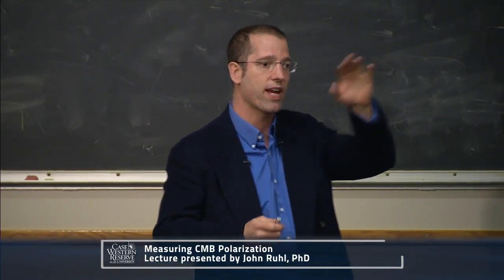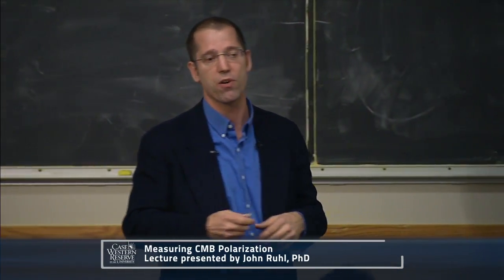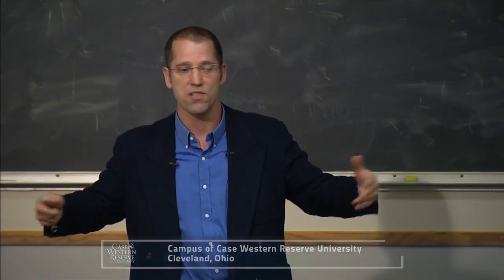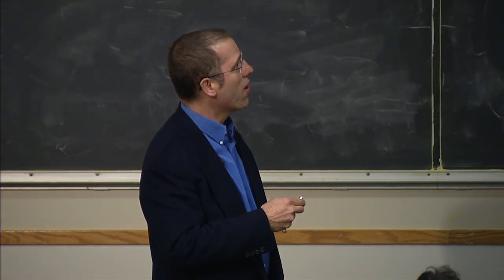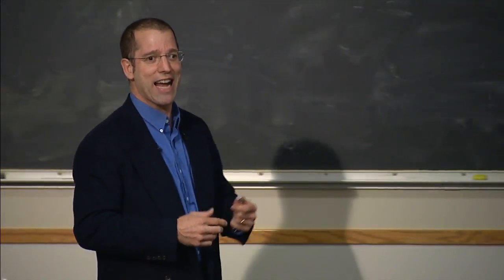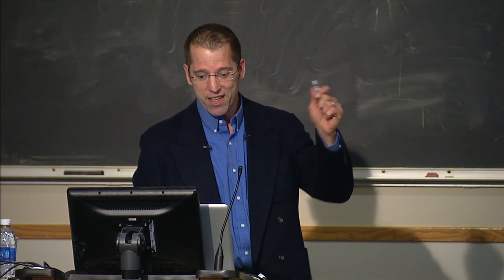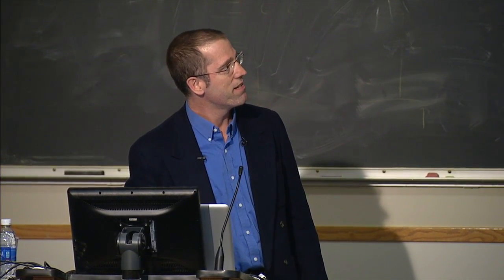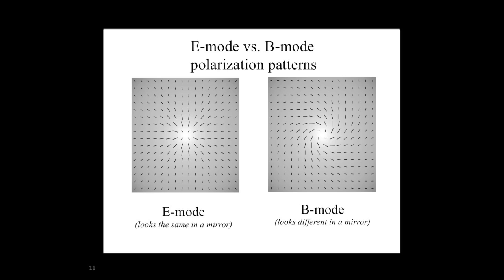Now there's a problem. Gravity waves are not the only way to generate such a pattern around those electrons. The regular density perturbations that Glenn talked about last week — the ones that create the maps showing intensity variations of the microwave background, which later grew to be clusters of galaxies and everything — they also create these patterns around electrons. And that's annoying — they're hiding our gravity waves.